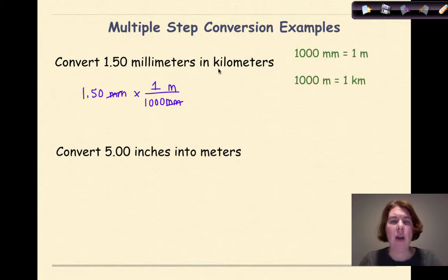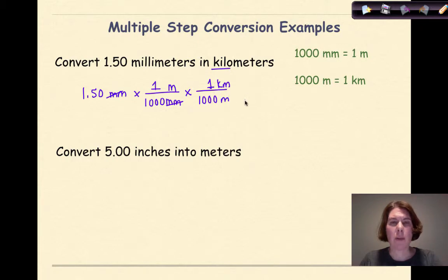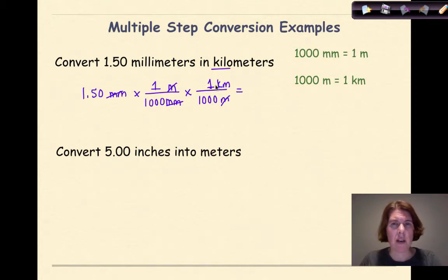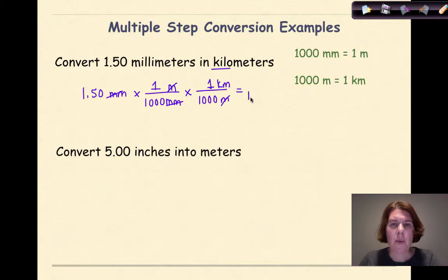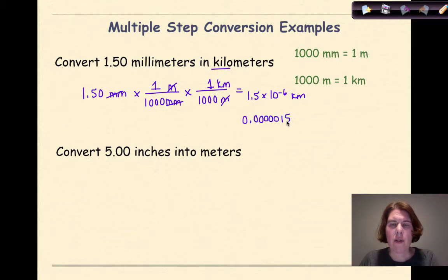I'm in the base unit of meters now, so I use the next conversion factor to get to kilometers. I put another multiplication sign and a line, with meters on the bottom and kilometers on top — there are 1000 meters in one kilometer. Meters cancel meters, leaving me with kilometers. Multiplying out: 1.5 times 1 times 1, divided by (1000 times 1000) in parentheses in the calculator, gives 1.5 times 10 to the negative 6 kilometers in scientific notation.